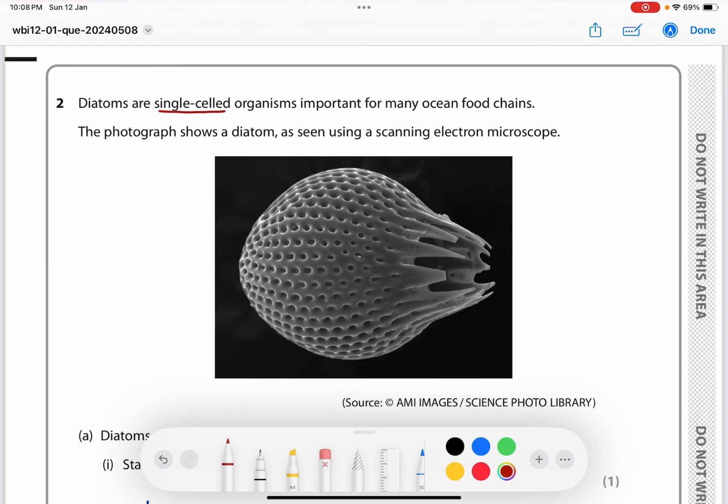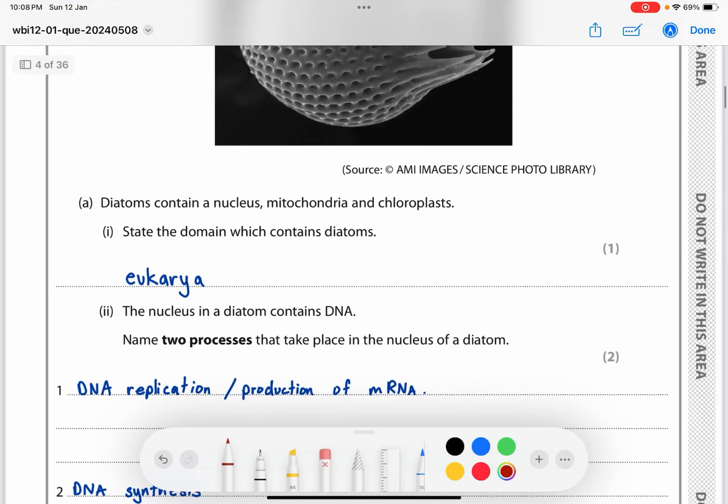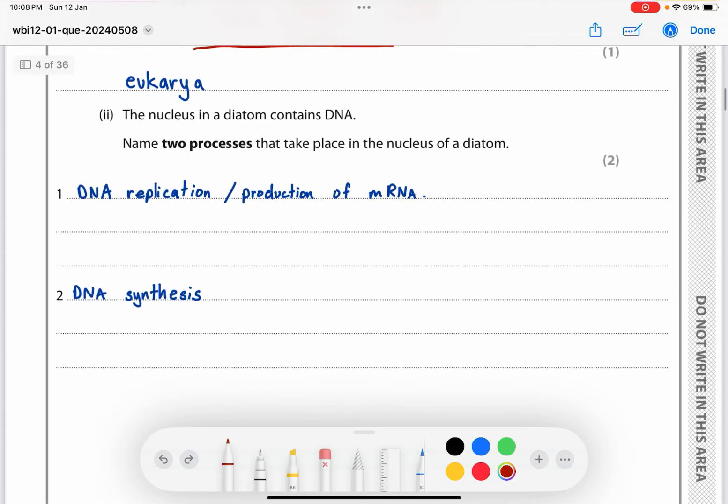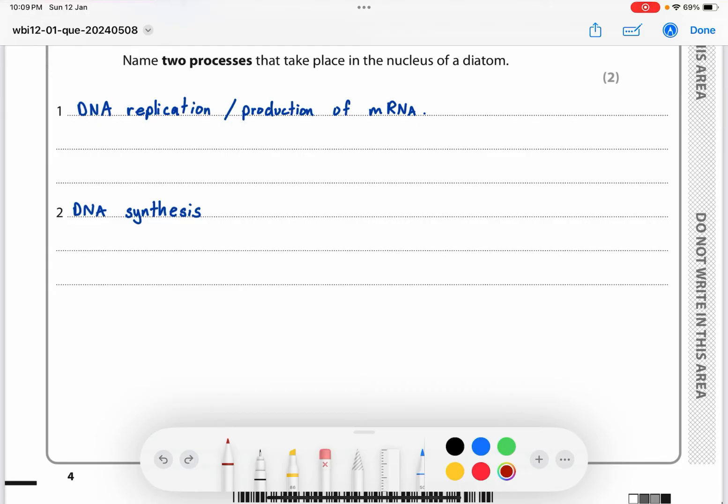Question two. Diatoms are single-celled organisms important for many ocean food chains. The photograph shows a diatom using a scanning electron microscope. Diatoms contain a nucleus, mitochondria, and chloroplasts. State the domain which contains diatoms - that's going to be eukarya. The nucleus in the diatom contains DNA. Name two processes that take place in the nucleus of a diatom: DNA replication occurs, production of mRNA, and DNA synthesis.